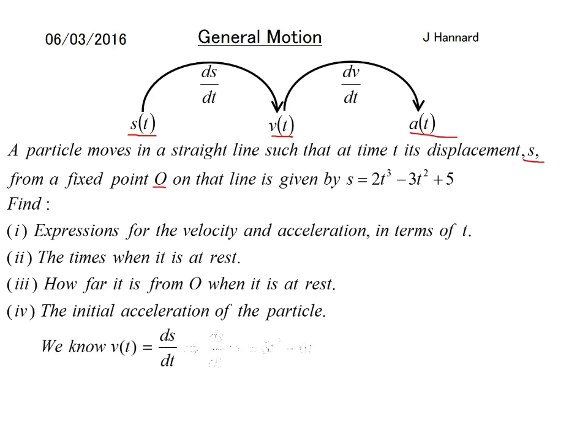We know that v(t) equals ds/dt, so ds/dt therefore means v = 6t² - 6t because power to the front, knock one off the power, and then power to the front, knock one off the power again, and the 5 just disappears.